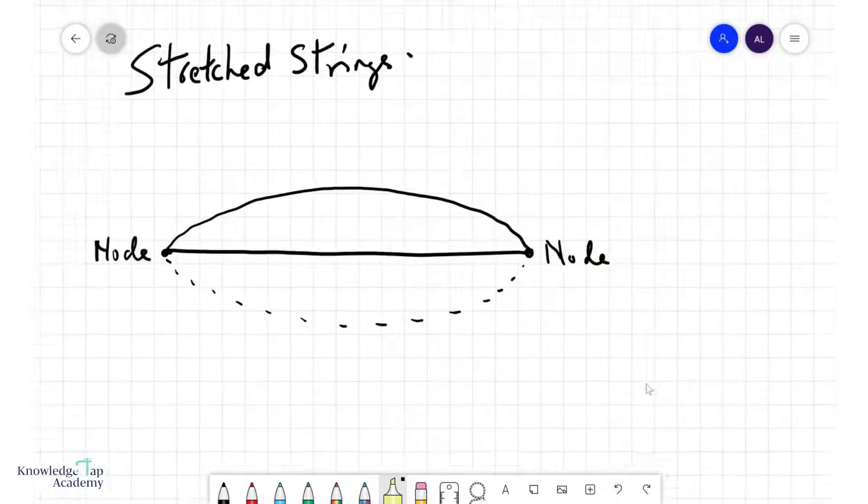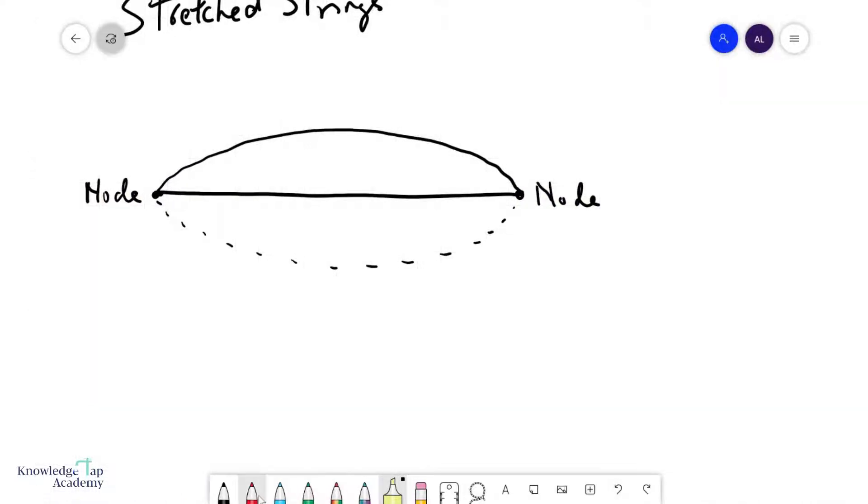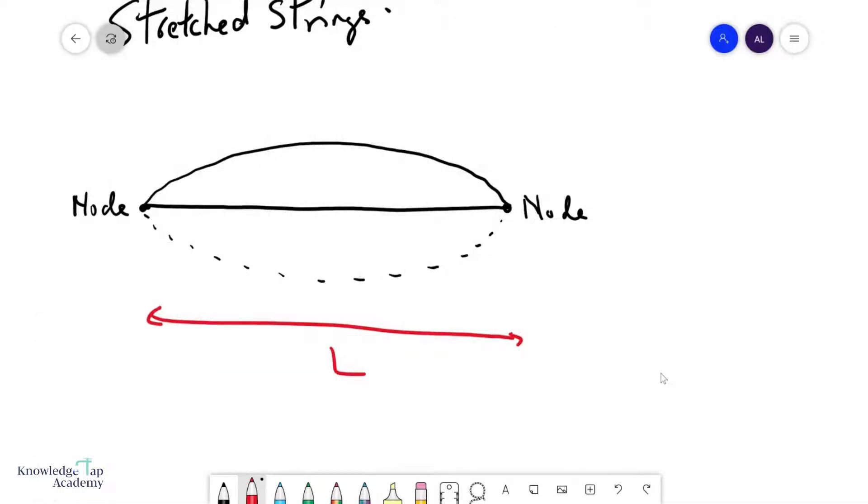Now when you look at this diagram, it looks like the easiest way, or one of the ways, to do this is to have a wave that looks like this. So let's call this L, the length of the string, and if you look at this very carefully, you'll notice that L basically equals to half a wavelength.